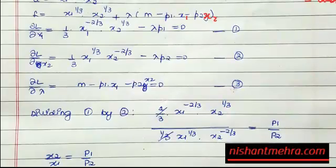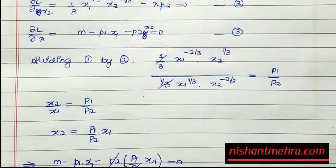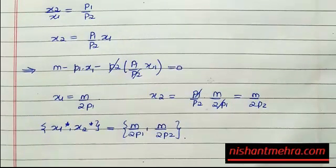Dividing the first condition by the second gives x2/x1 = p1/p2, so x2 = (p1/p2)*x1. Substituting this back into the budget constraint m - p1*x1 - p2*(p1/p2)*x1 = 0, and solving gives x1* = m/(2p1) and x2* = m/(2p2).